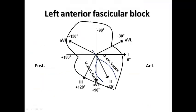To understand fascicular blocks, we start with a diagram that simplifies the anterior and posterior fascicles in relation to the normal axis of the heart. We recall the four quadrants representing the cardiac axis, and here we see a diagram of both atria and ventricle superimposed on the axis and on the anterior and posterior fascicles.